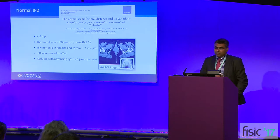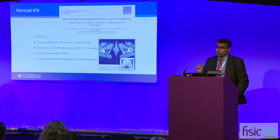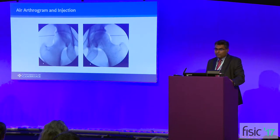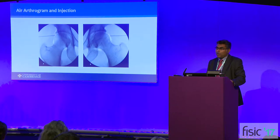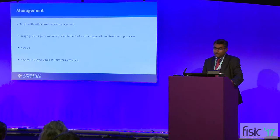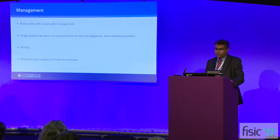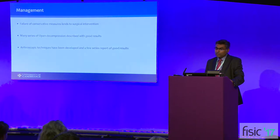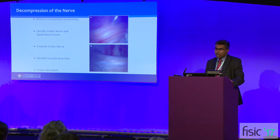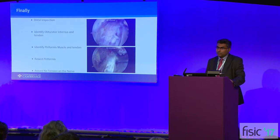We did a study looking at the normal ischiofemoral distance on CT scans of about 298 hips — the normal distance is about 19 millimetres in females and about 23 millimetres in males. We find the air arthrogram and injection of local anaesthetic very helpful to rule out intraarticular pathology before embarking on major surgical intervention. In terms of management, most patients would settle with conservative management and image-guided injections with NSAIDs and physiotherapy targeted at piriformis stretches. Failure of conservative measures would lead to surgical intervention — both open and endoscopic techniques have been described. We can do this endoscopically, performing a trochanteric bursectomy, sciatic nerve neurolysis, and releasing the piriformis muscle.